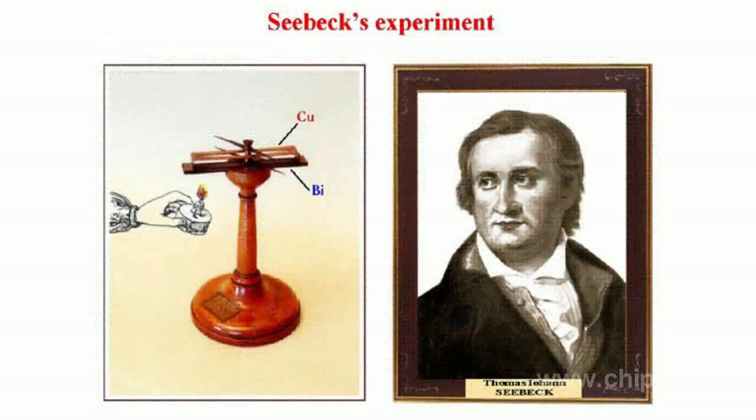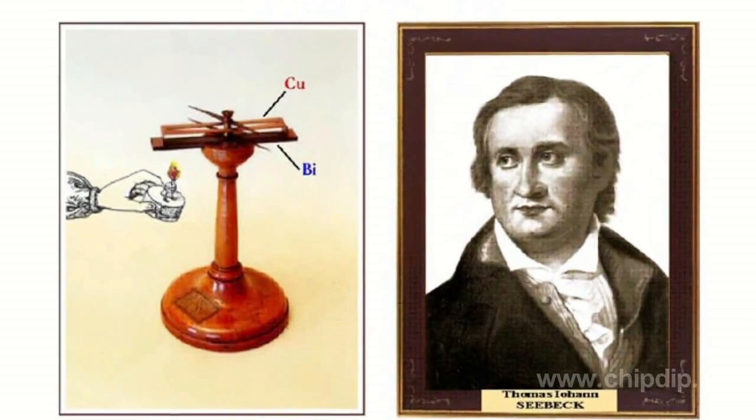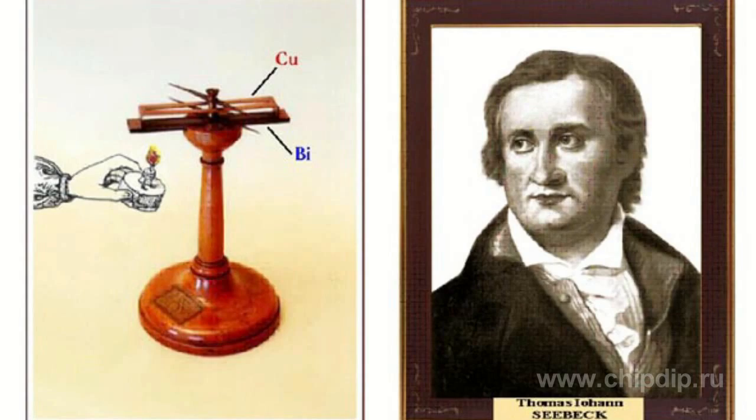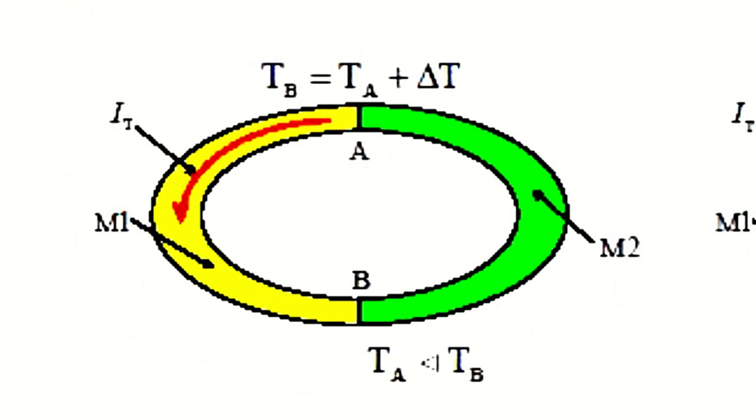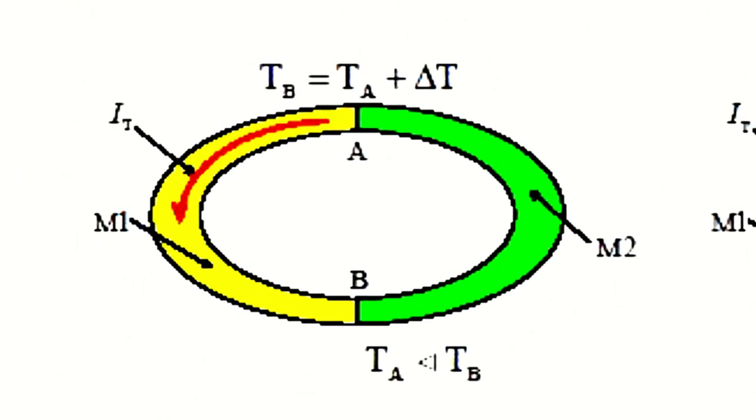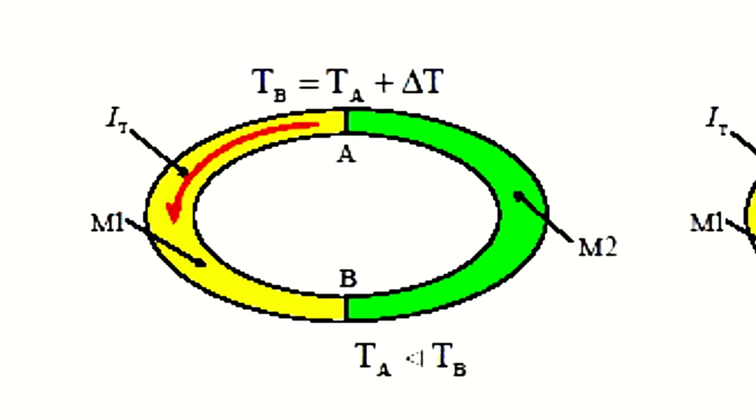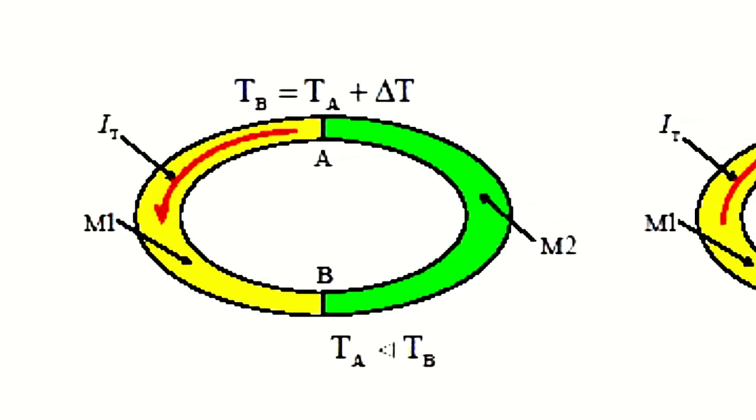The best known and widely used is the Seebeck effect, discovered in 1821. The Seebeck effect consists in the generation of electromotive force in a closed circuit consisting of dissimilar conductors if the junction areas are kept at different temperatures. In the simplest case, when the circuit consists of two different conductors M1 and M2, it is called a thermoelement or a thermocouple, and its branches are called thermoelectrodes.